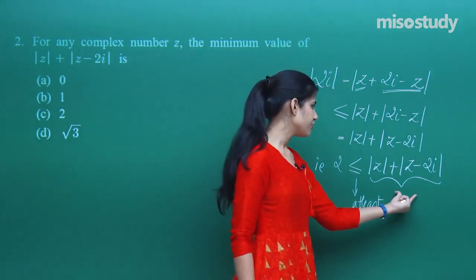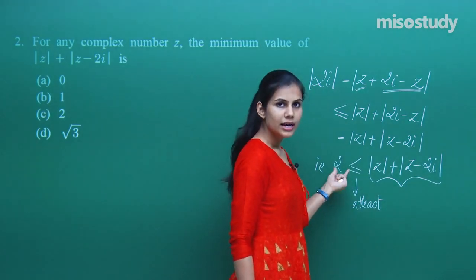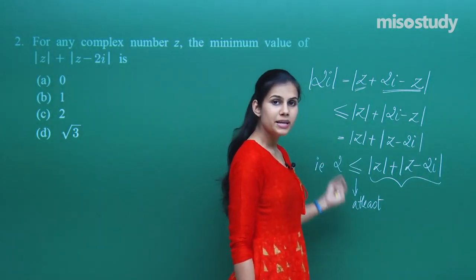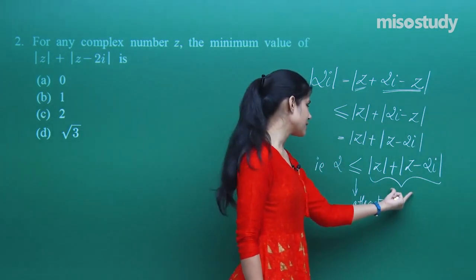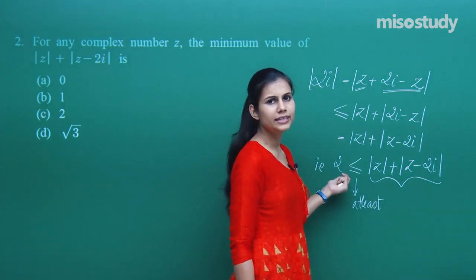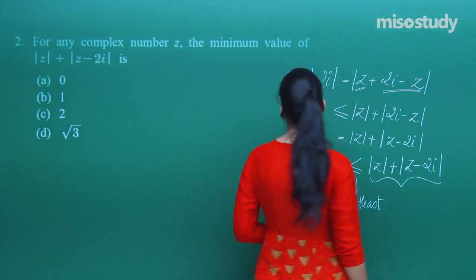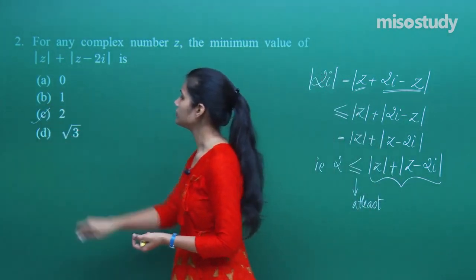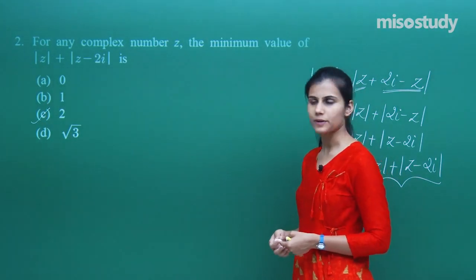This expression can attain a minimum value of 2. It will definitely be at least 2 — it can be greater than 2 but never less than 2. Therefore, the minimum value is 2.